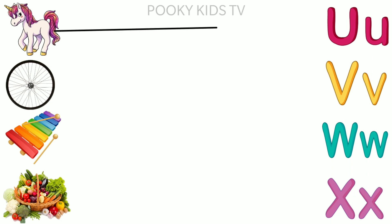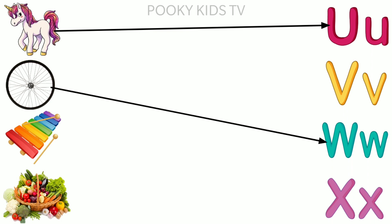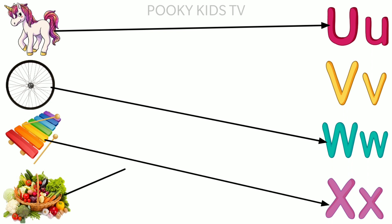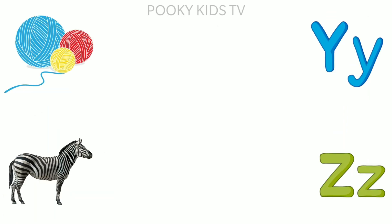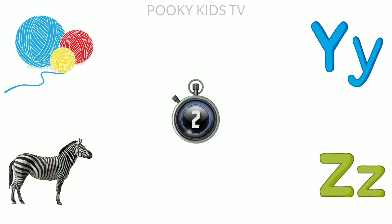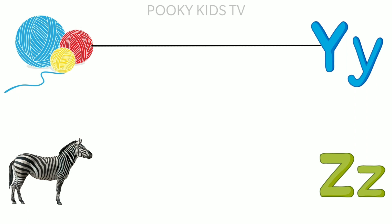U for Unicorn. W for Wheel. X for Xylophone. V for Vegetables. Y for Yarn. Z for Zebra.